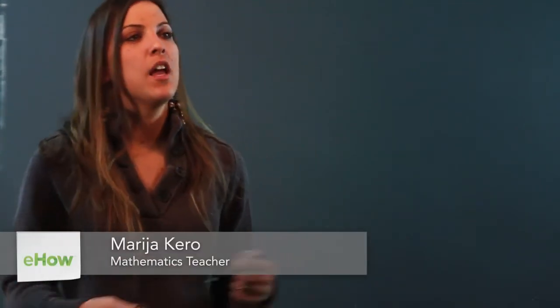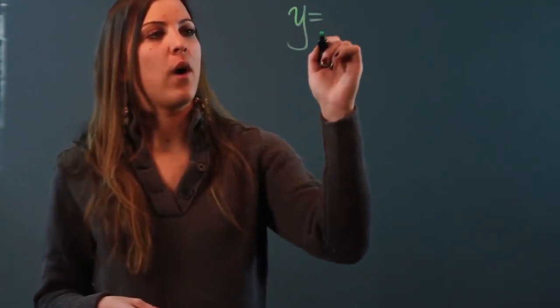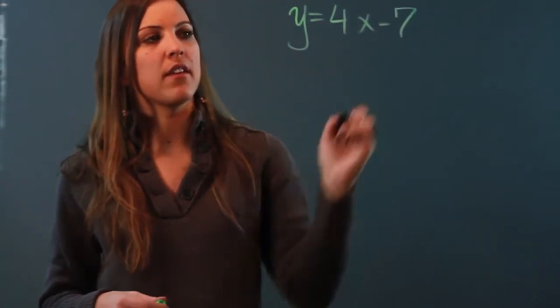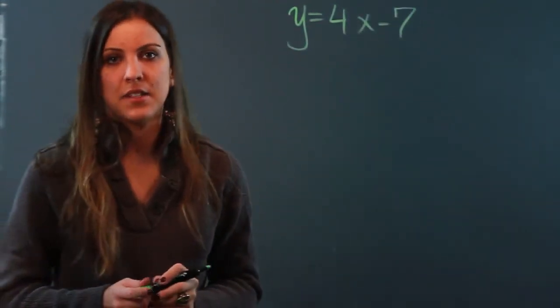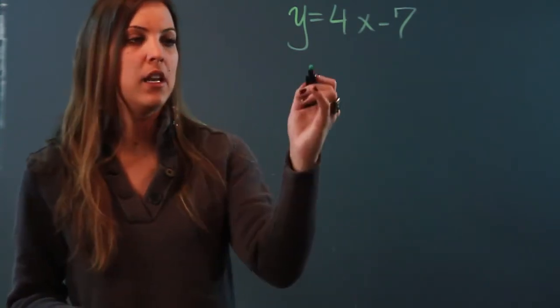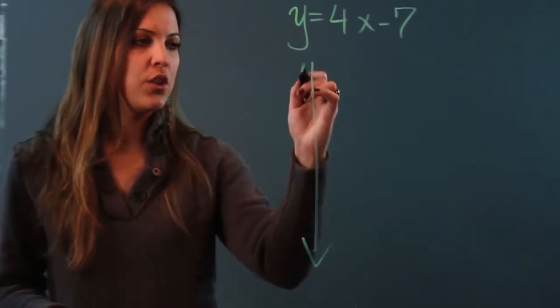Hi, my name is Maria and I'm a mathematician. Today I'm going to tell you how to find the x and y-intercepts. If I'm given a line that is y equals 4x minus 7 and I want to find its x-intercept and its y-intercept, first I have to understand what those two things mean.